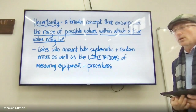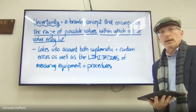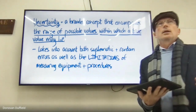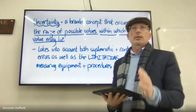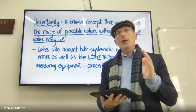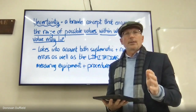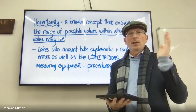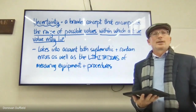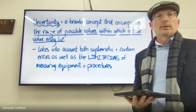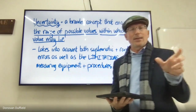Uncertainty is a broader concept that encompasses the range of possible values within which a true value may appear. For example, if we measure g = 9.9 m/s² but calculate the uncertainty to be ±0.1, the range is 9.8 to 10.0. The accepted value of 9.81 actually falls within that range. Uncertainty takes into account both systematic and random errors as well as the limitations of measuring equipment and procedures.